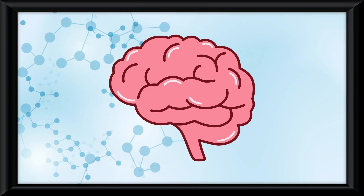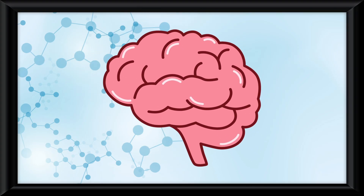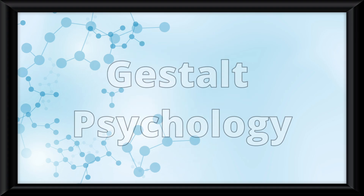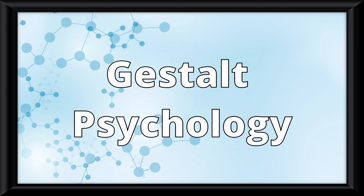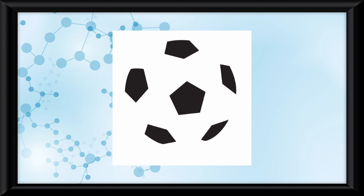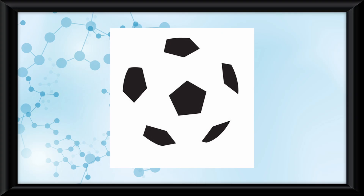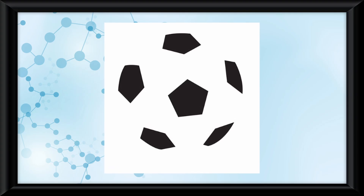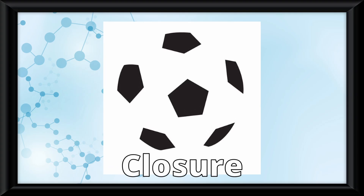Now let's have some fun — this is where I trick your mind with visual examples. Let's start with some Gestalt psychology principles. In this image, there are only hexagons on the screen, but your brain fills in the gaps and sees a soccer ball, which is a principle called closure.